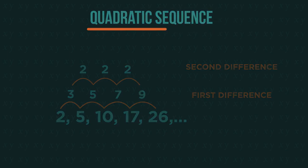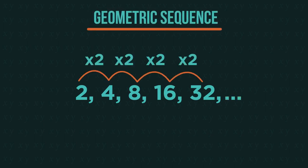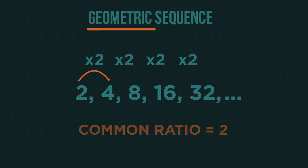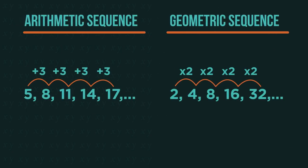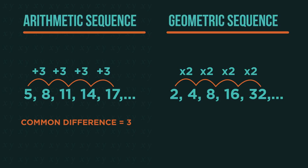Now on to our final sequence — can you find the next three terms? This is called a geometric sequence. We multiply by the same value each time, and we call it a common ratio. So in arithmetic or linear sequences it's called a common difference, but in geometric sequences it's called a common ratio.